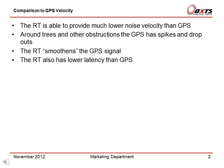Now let's look at the comparison to GPS velocity. The RT is able to provide much lower noise velocity than GPS. Around trees and other obstructions the GPS has spikes and drops out. The RT smoothens the GPS signal and also has lower latency than GPS.